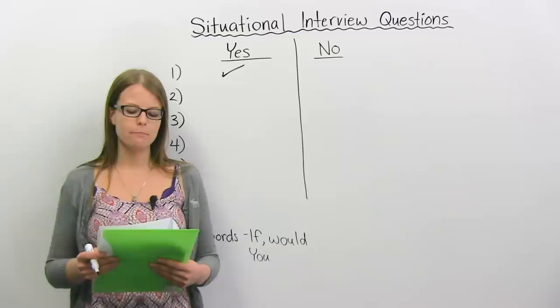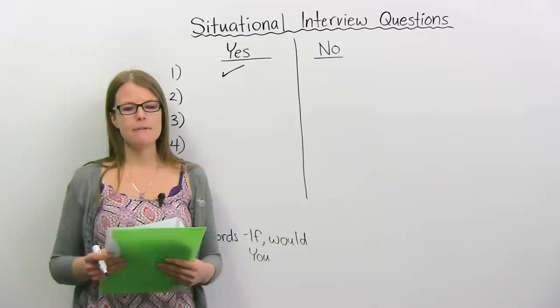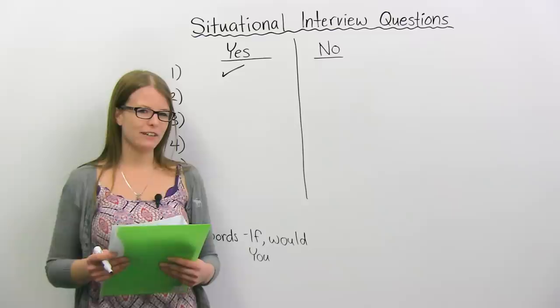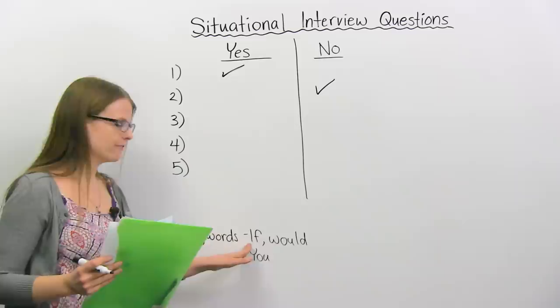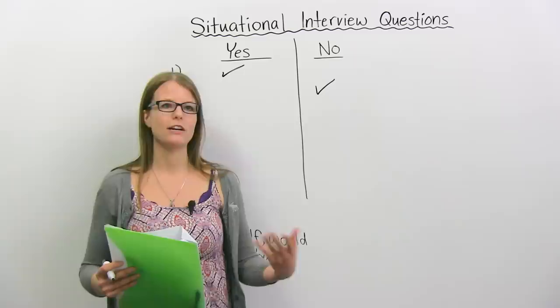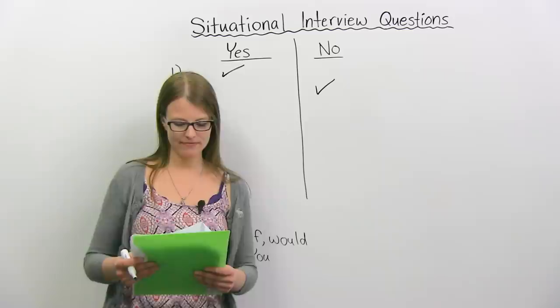Question number two: 'Tell me about a time when you made an unpopular decision at work.' This one is not a situational question — it's a different type of interview question. We didn't hear the words 'if' or 'what would you do,' and we're not asking you to imagine what you would do. We're actually asking for a past experience, so this is not a situational question.